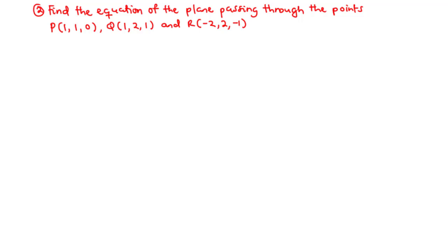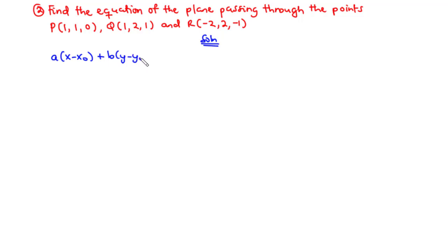How do we find the equation of a plane passing through three non-collinear points? At this point, we only know of one formula: the scalar equation of a plane passing through a point P0 with a normal vector n. That is A times (X minus X0) plus B times (Y minus Y0) plus C times (Z minus Z0) equals 0. This is the only equation of a plane that we know. We are asked to find the equation of a plane passing through three points.